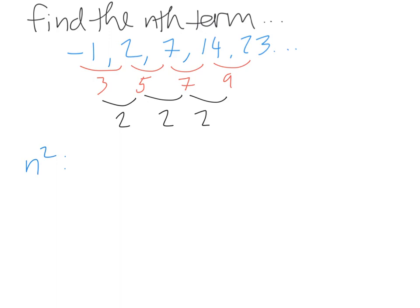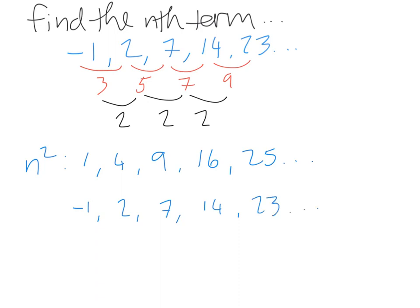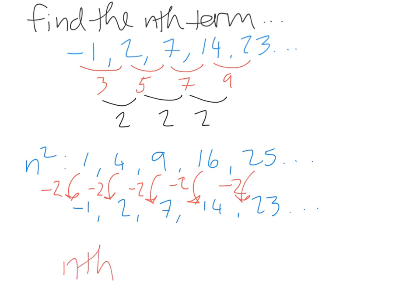Again, we write out the square number sequence: 1, 4, 9, 16, 25... Then underneath it we write out our sequence: -1, 2, 7, 14, 23. We compare the n squared sequence to our sequence to see the difference. To get from 1 to -1, we minus 2. From 4 to 2, minus 2. From 9 to 7, minus 2. From 16 to 14, minus 2. And from 25 to 23, minus 2. So the nth term for our sequence is n squared minus 2.